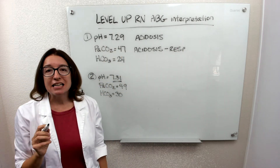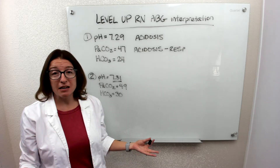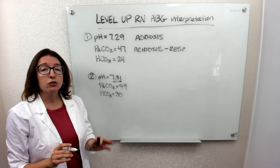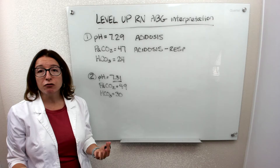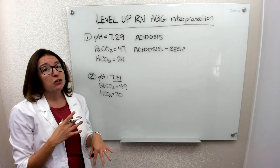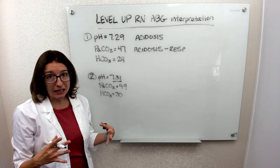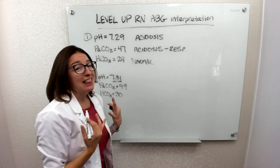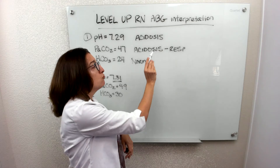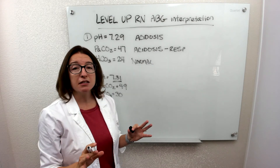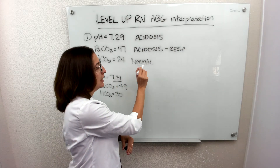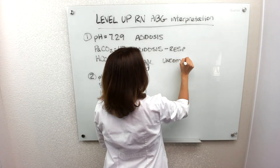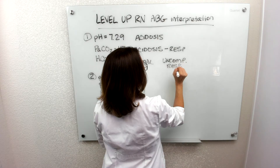Now we need to see if the metabolic system is trying to compensate. Normal HCO3 levels should be between 22 and 26, and here we have 24, which is totally within normal range. So the metabolic system is not doing anything to fix the situation — we have a normal HCO3 level. In this case, we have uncompensated respiratory acidosis: the respiratory system is causing the acidosis and the metabolic system isn't doing anything to fix it.